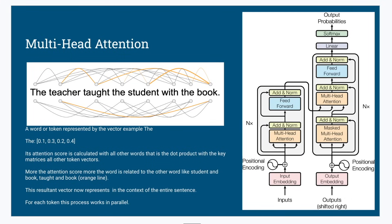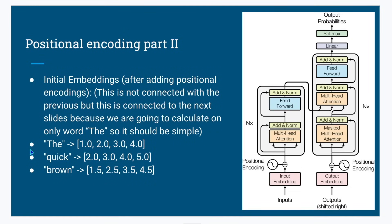In multi-head attention, there are a couple of matrix multiplications. Every token vector moves through multiple matrix calculations and generates the same dimensional vector — for example, a four-dimensional vector. After processing through the multi-head attention block, the four-dimensional vector gets generated with new numbers, which represents the change. The new vector represents numbers that are impacted by all other tokens provided in the context.